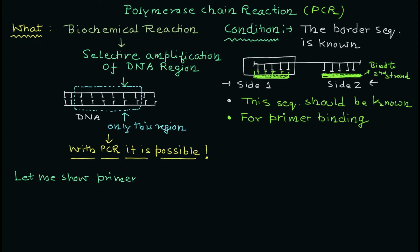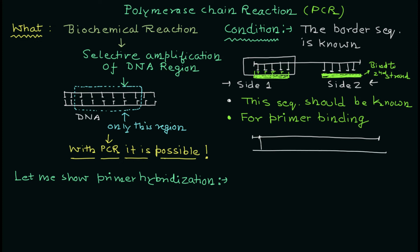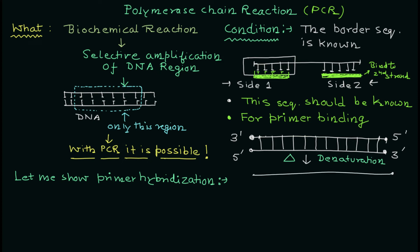Let's start by understanding primer hybridization — how the primer is going to bind. Primers are short oligonucleotide sequences designed specifically to the border sequences, so you can amplify the region between these two adapter molecules. Consider this double-stranded DNA molecule. Based on the carbon numbering, you can name the strands as 3-prime to 5-prime and 5-prime to 3-prime. The first step is denaturation: if you want the primer to bind to the DNA sequence, you need to separate the strands, and using heat — 94 degrees Celsius — the DNA strands will separate.